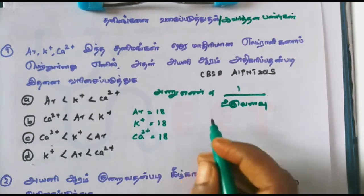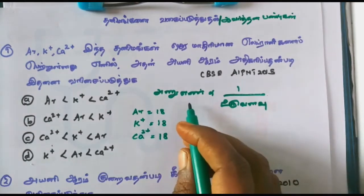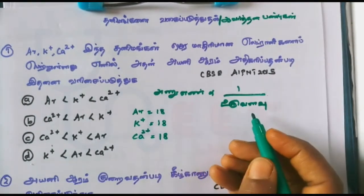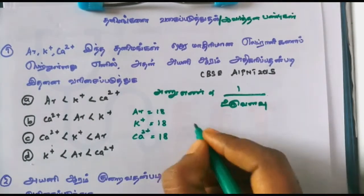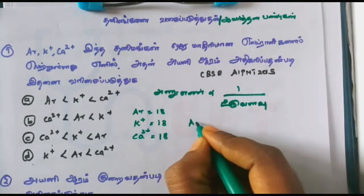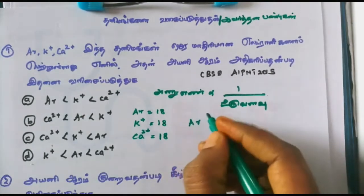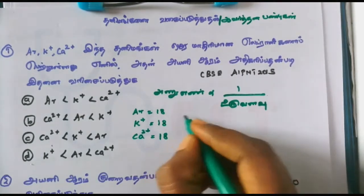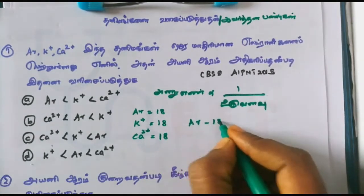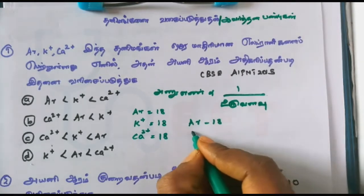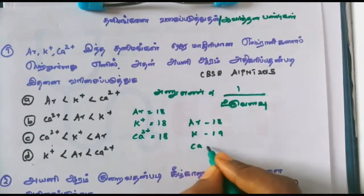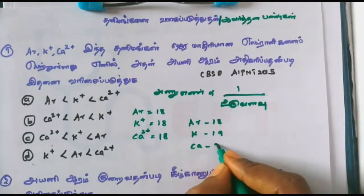The calcium ion has 18 electrons. We can also consider argon: argon is 18, and calcium is 20, so calcium loses electrons to reach 18.